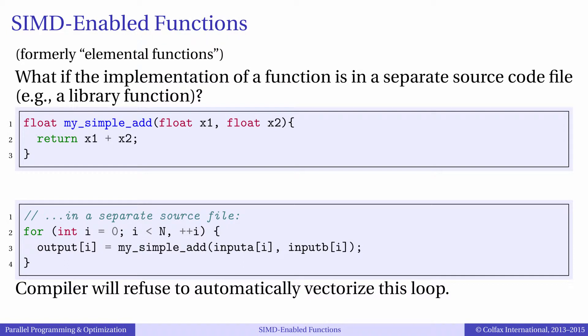However, what if the function is in a separate file? This can happen when we are dealing with a library function, since library code will be separate from user code for security and modularity purposes. In this case, the compiler will refuse to vectorize the loop in the user code. Moreover, the library function will only have a scalar implementation. However, this is a case where simd-enabled functions can come to the rescue.